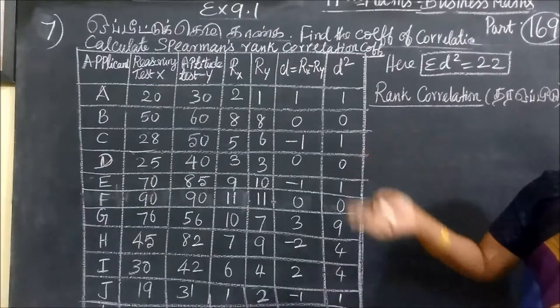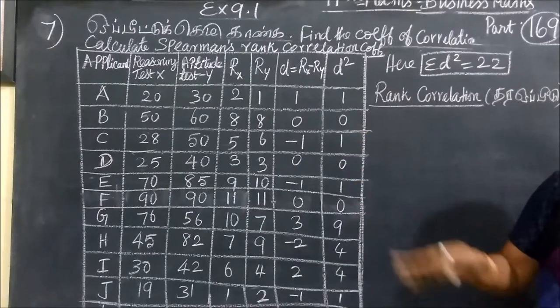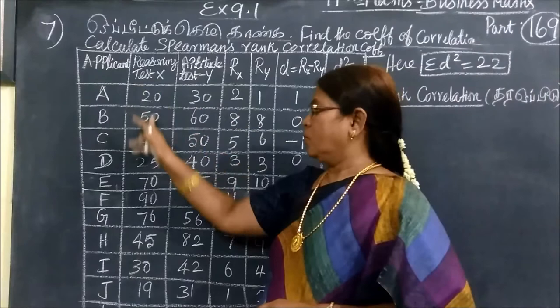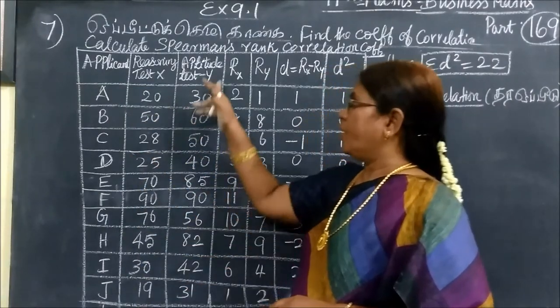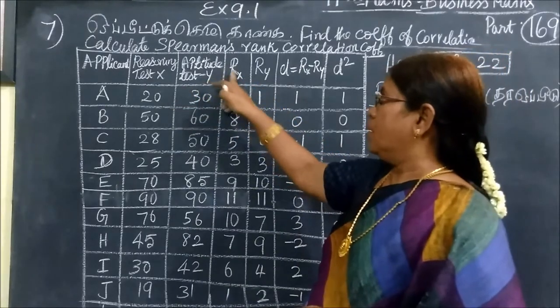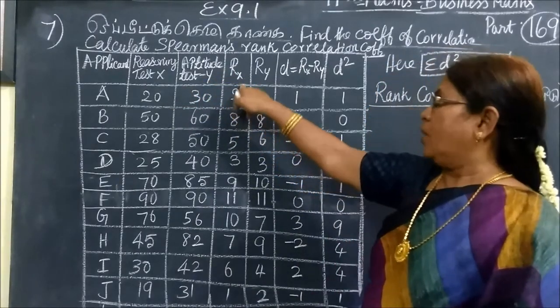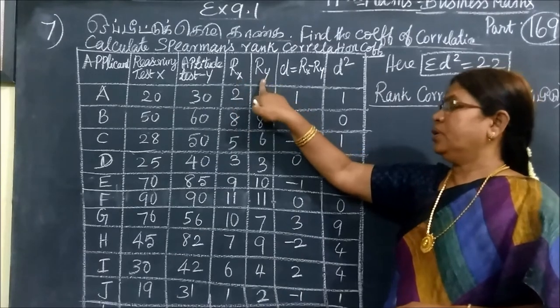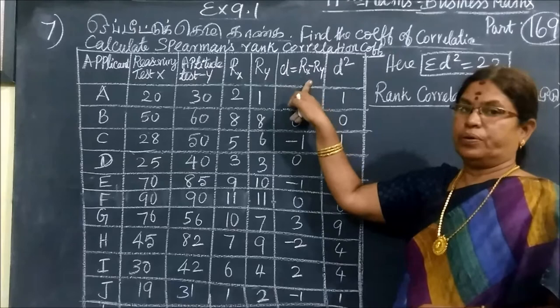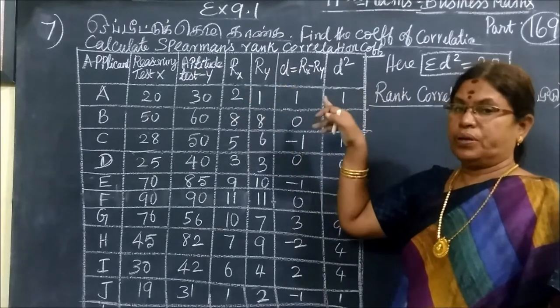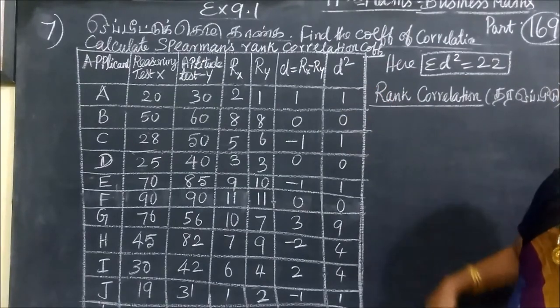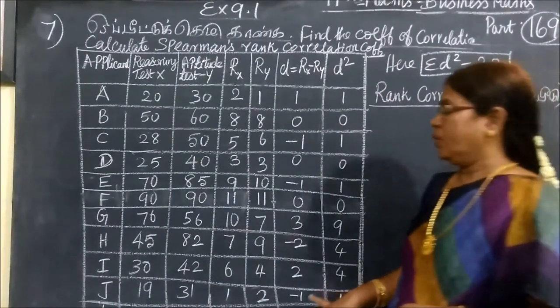We rank the reasoning test. For aptitude test, we rank the marks. We rank the reasoning test as Rx and the aptitude as Ry. The rank of Rx and Ry is different. The difference is squared. You are using the formula and finding the rank of the given data.